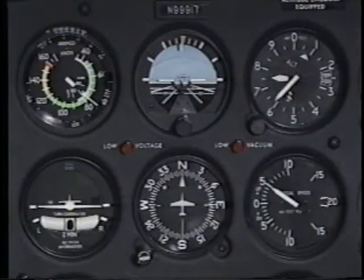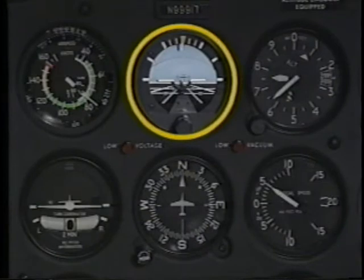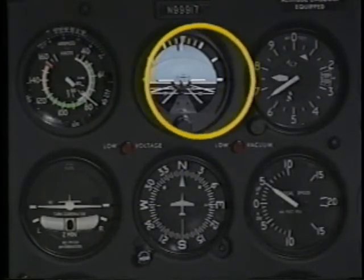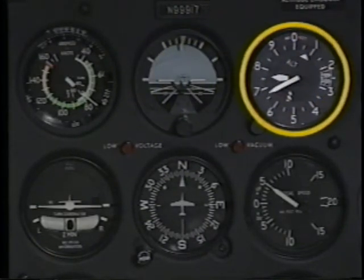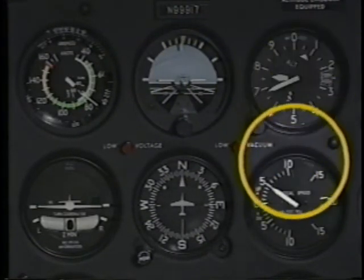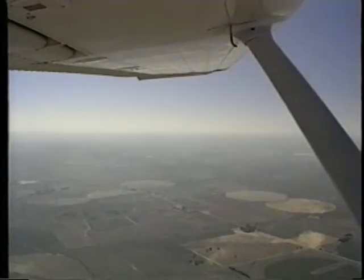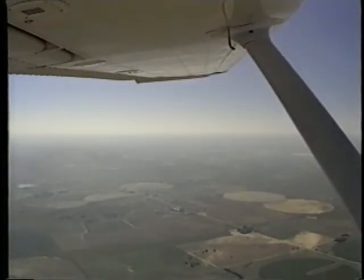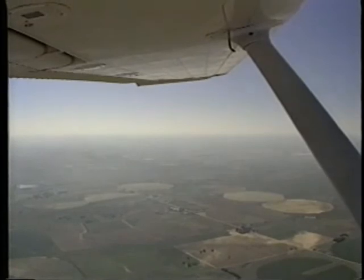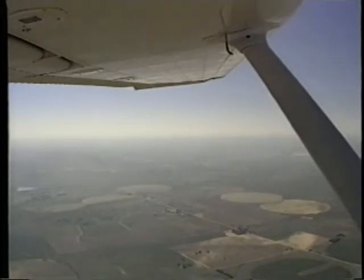The flight instruments confirm the climb by a nose-high position on the attitude indicator, an increasing altimeter, and a positive rate of climb on the vertical speed indicator. Another visual indicator of a climb is the positive angle created by the wingtip and horizon.